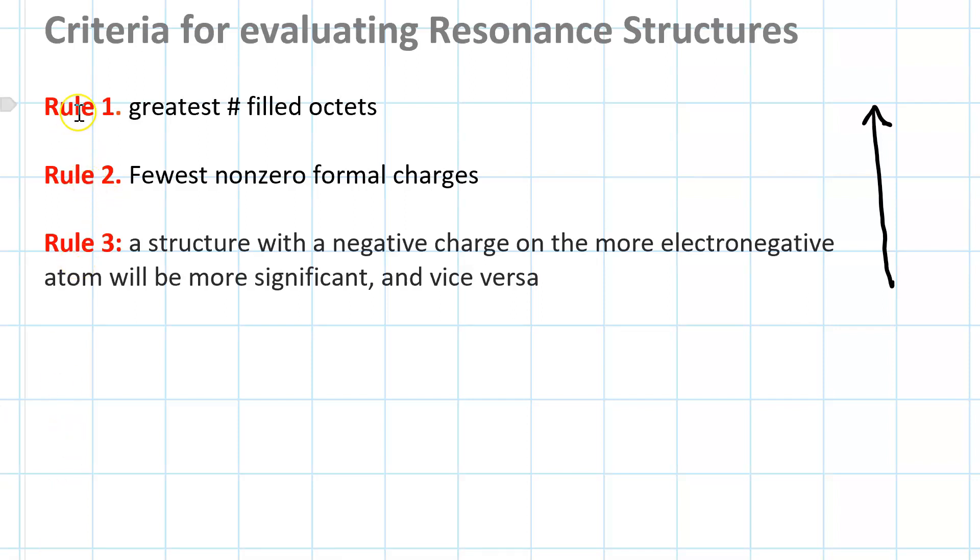Rule number one says the best resonance structure is the one that has the greatest number of filled octets. In other words, when you have a carbocation, those are weaker contributors.